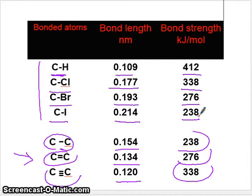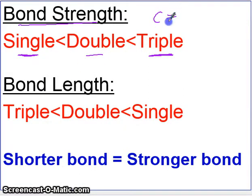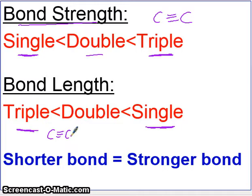To summarize: a single bond is the weakest in bond strength, a triple bond is the strongest, and a double bond is in the middle. The more bonds you have, like a triple bond, the stronger and tougher it is to break. For bond length, the triple bond has the shortest bond length and the single bond has the longest. A triple bond brings atoms closest together. In short, the shorter the bond, the stronger the bond.